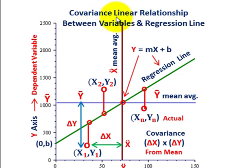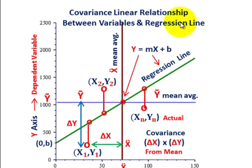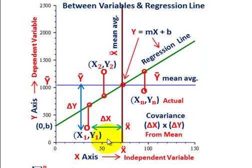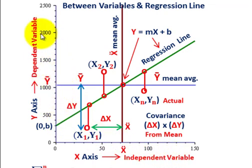What we're going to be going over here is covariance, and we're going to look at its linear relationship between two different variables, x and y. We're also going to look at how covariance figures into our regression line. So let's look at our example. We're going to have some plotted points on an x-y graph, with points between our x and y coordinates. Along our x-axis we'll have the independent variable, and along our y-axis the dependent variable — where our y value depends on the x value. We'll look at covariance in terms of variables x and y.